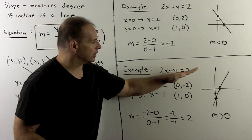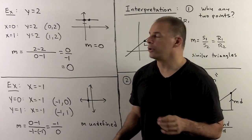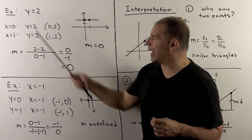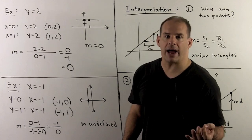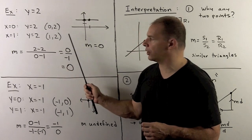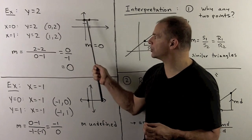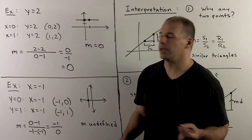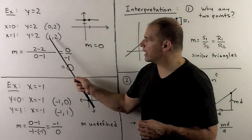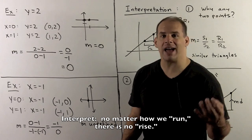We have two special cases. First, horizontal lines, where the equation has the form y equals a constant. Take y equals 2: no matter what we put in for x we get y equals 2, so using x equal to 0 or 1 gives the points (0, 2) and (1, 2). Plotting those and connecting gives a horizontal line through 2 on the y-axis. Computing the slope: change in y is 2 minus 2, change in x is 0 minus 1, giving 0 over minus 1 — the slope is 0.